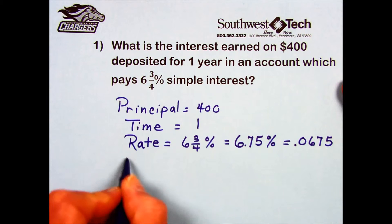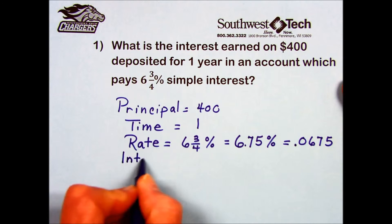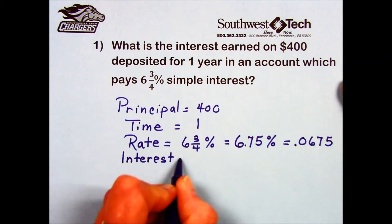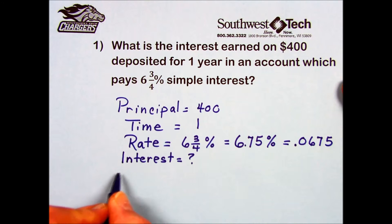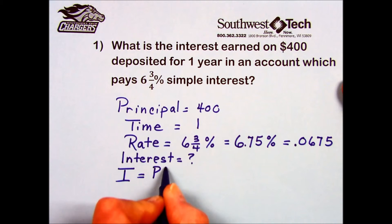The question asks: what is the interest earned? To find that, we use the simple interest formula: I equals the principal times the rate times the time.